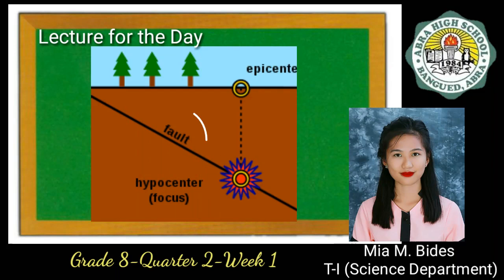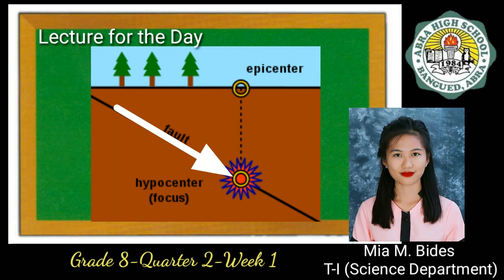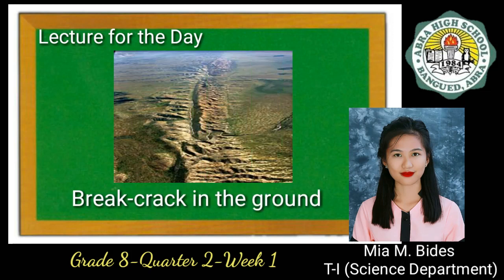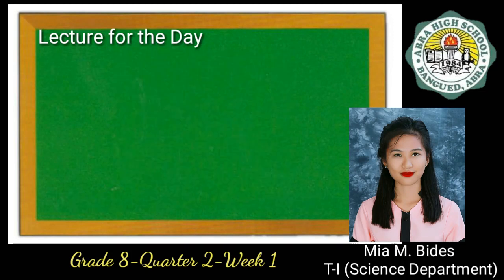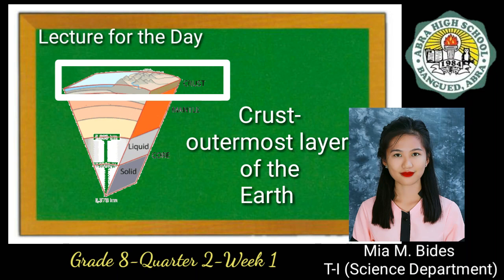A fault is a break in the Earth's crust, and along the break, significant movement has taken place. The word 'break' refers to a crack in the ground, while 'crust' refers to the outermost layer of the Earth. We live on the surface of the crust.